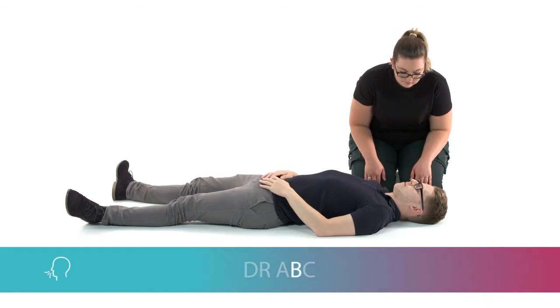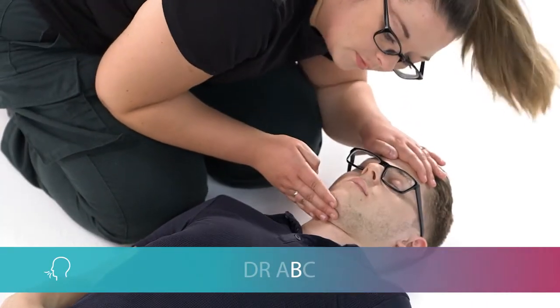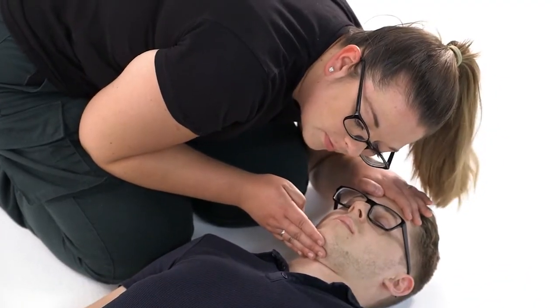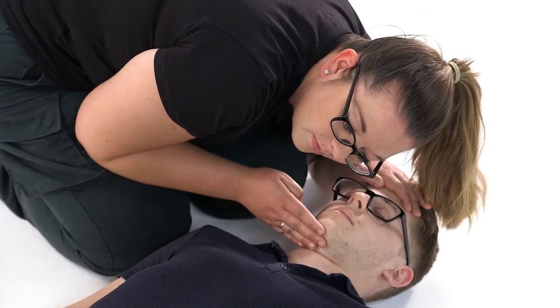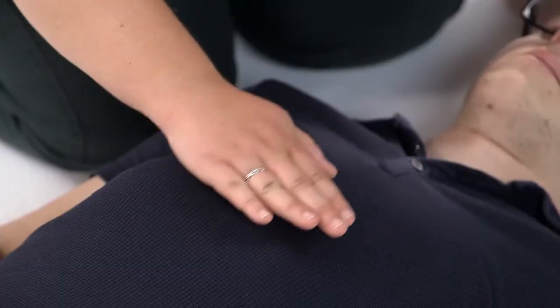Breathing. Spend at least 10 seconds looking, listening, and feeling for normal breathing from the casualty. This is long enough to gauge whether their breathing is rhythmic and normal. If you're not sure if they're breathing properly, assume that they aren't. For an adult that isn't breathing properly or has stopped breathing altogether, call the emergency services, put the phone on loudspeaker and place it nearby. This lets you speak to the operator and begin CPR at the same time.